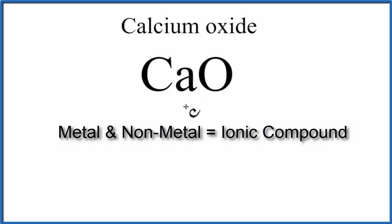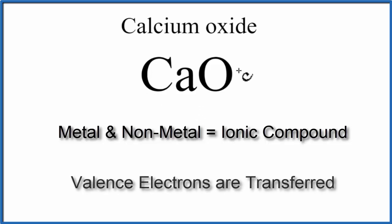In an ionic compound, the metal, the calcium, is going to transfer electrons to the non-metal, and that's what forms the ionic bond.